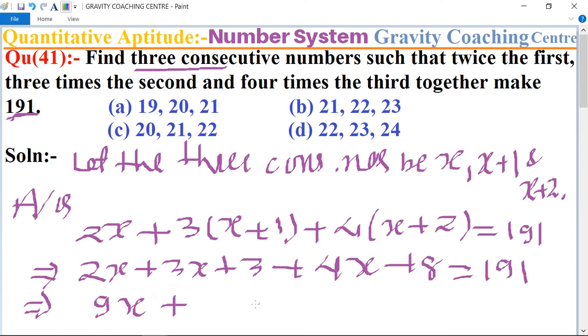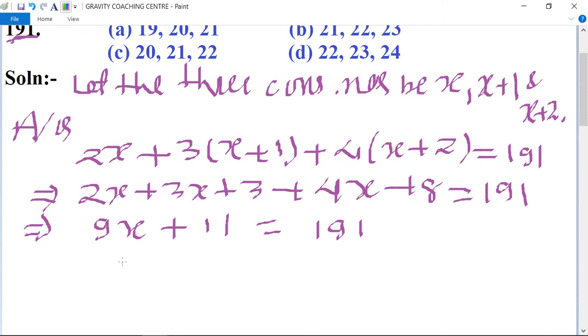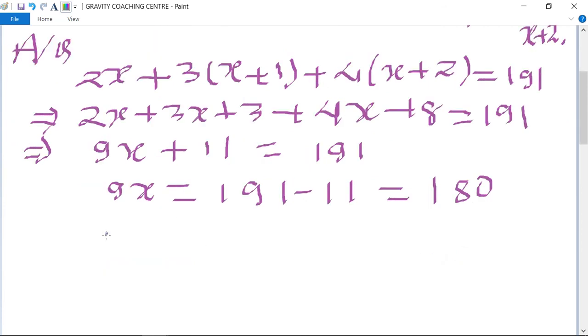So 9x equals 191 minus 11, which equals 180. Therefore, x equals 180 upon 9.